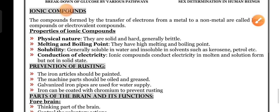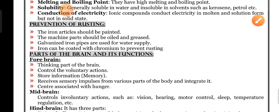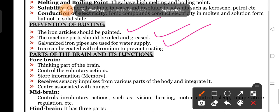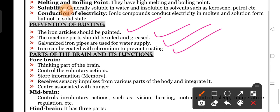This was a very important two-mark question. Next, prevention of rusting: how can we prevent rusting? First, the iron article should be painted. Next, machine parts should be oiled and greased. Then, galvanized iron pipes are used for water supply. Iron can be coated with chromium to prevent rusting. Several methods like anodization are also used.